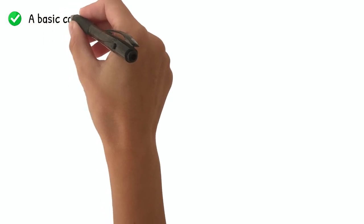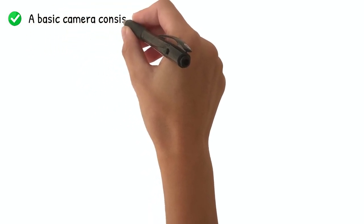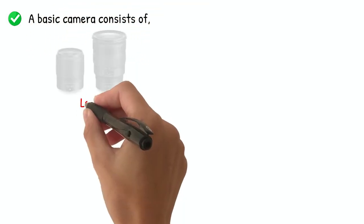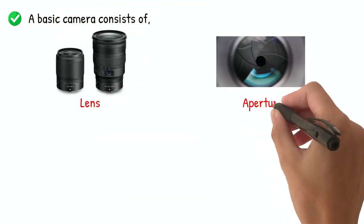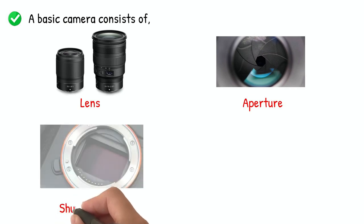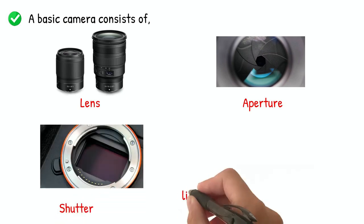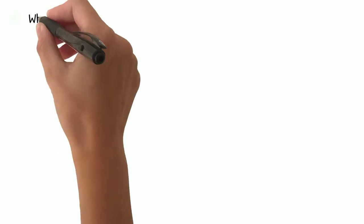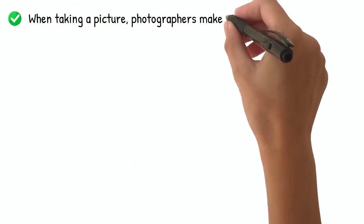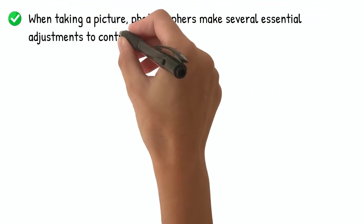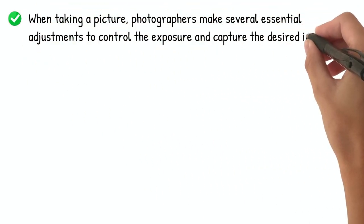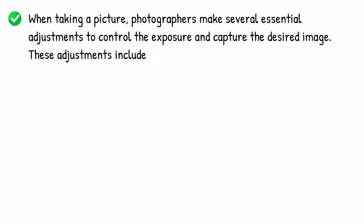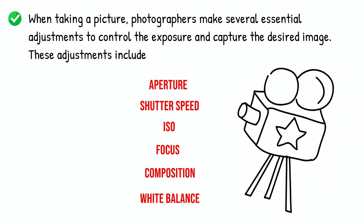A basic camera consists of a lens, an aperture, a shutter, and a light-sensitive medium, such as film or a digital sensor. When taking a picture, photographers make several essential adjustments to control the exposure and capture the desired image.